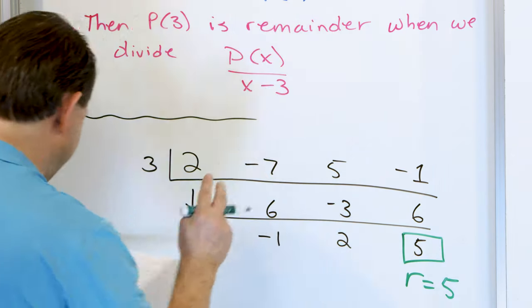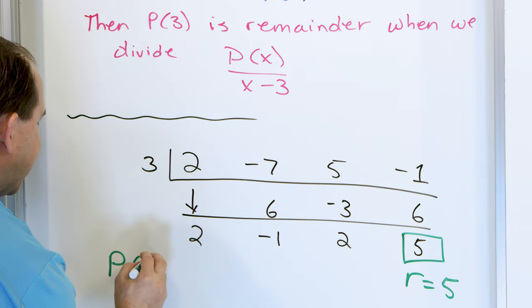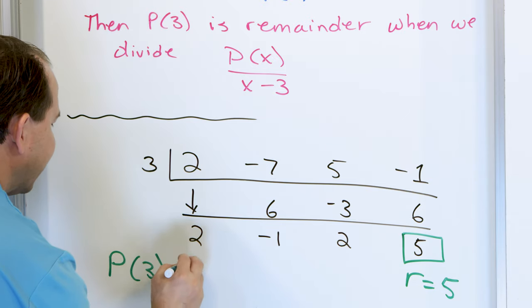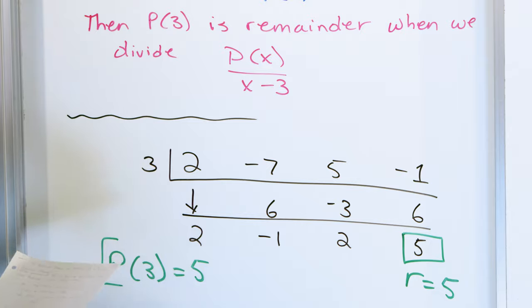And what that means is that the polynomial evaluated at the number 3 is actually equal to 5. It's crazy — it doesn't seem like that would be true, but it is true. Let's go verify this.